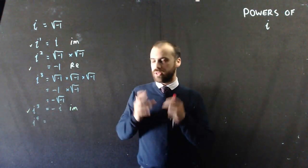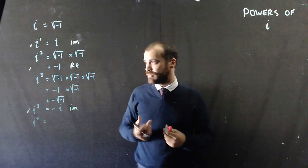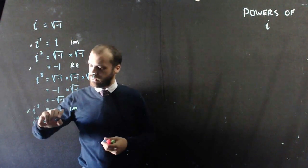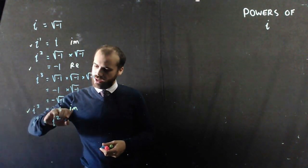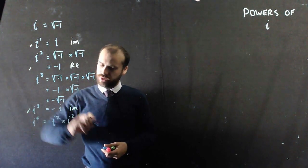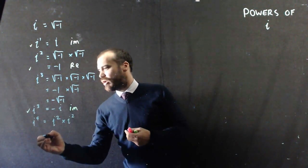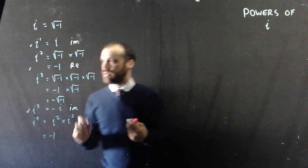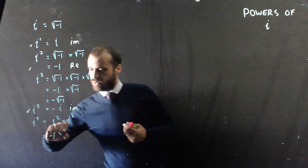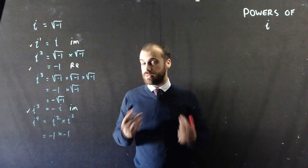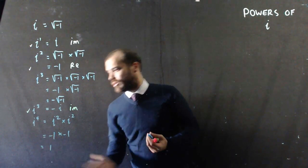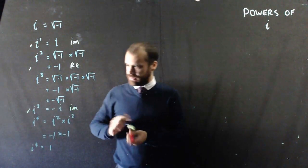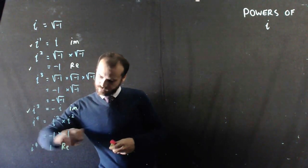Okay, so you might want to think and pause about what i to the 4 is. Well, i to the 4. I can show you a bunch of weird stuff to do this, but i to the 4 is the same as i squared times i squared. Well, what's i squared? i squared is negative 1. i squared is negative 1. Negative 1 times negative 1 is positive 1. So, that is a real number.